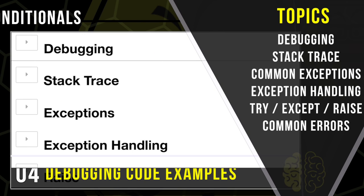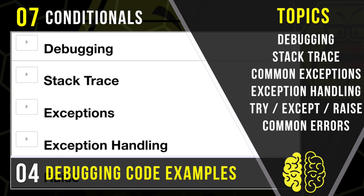Today's Left Brain lesson, we will be learning the how of programming by reviewing code examples that demonstrate debugging. We're going to talk about some basic simple use cases, and then we're going to look at the stack trace. When you have an error, a lot of information is printed out. The stack trace is the series of methods that led up to where the exception occurred.